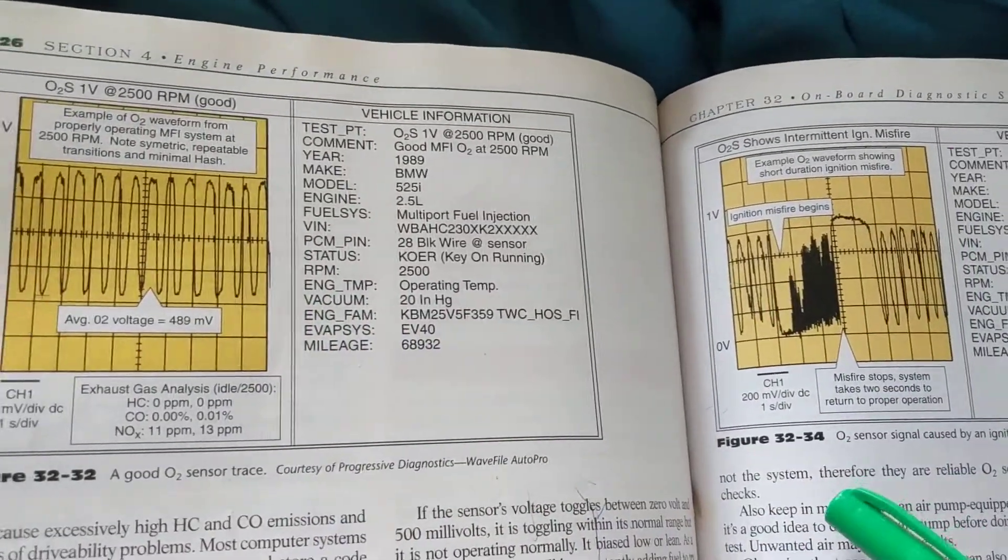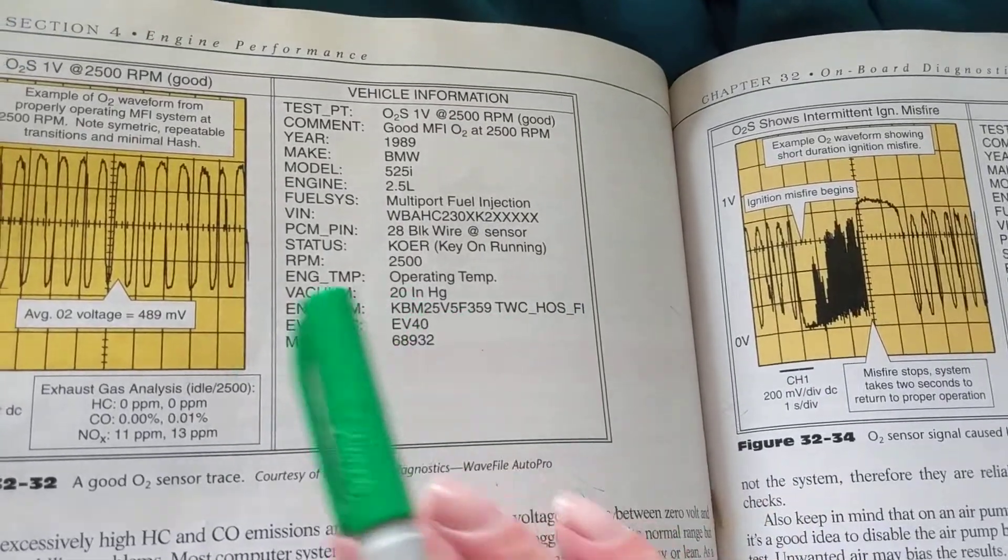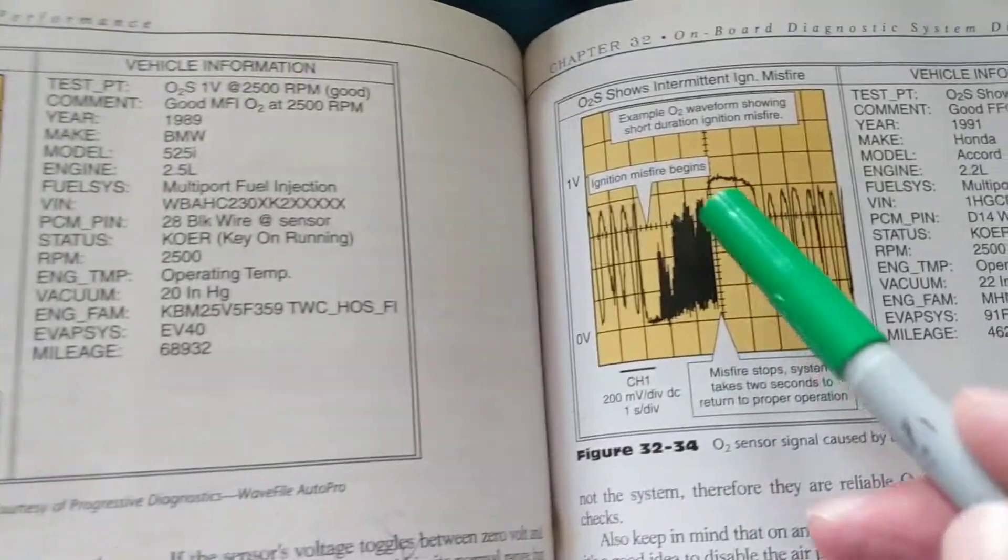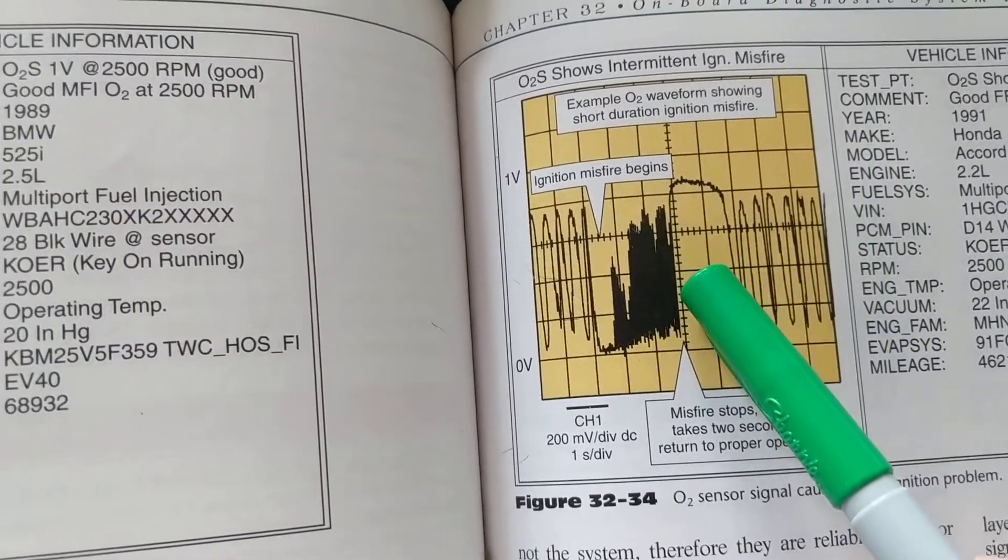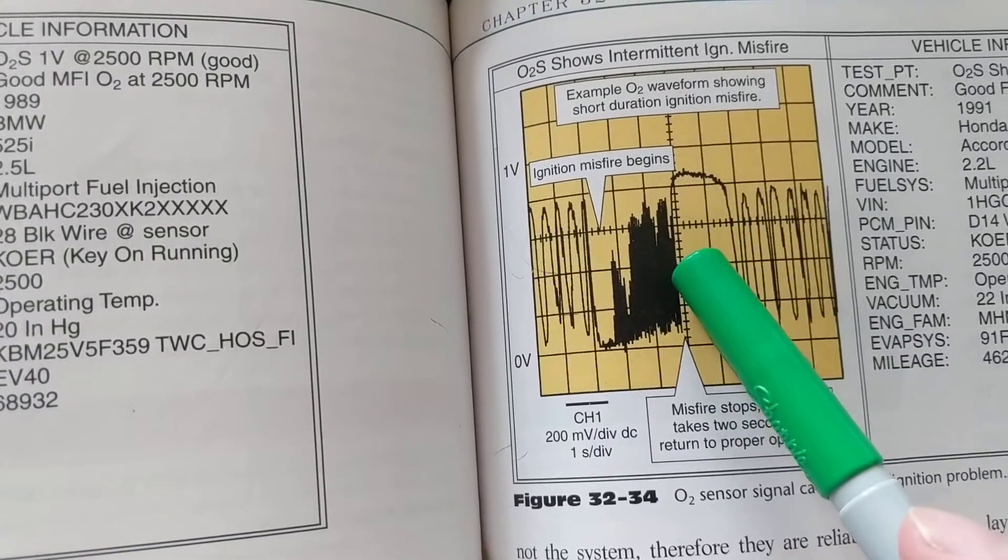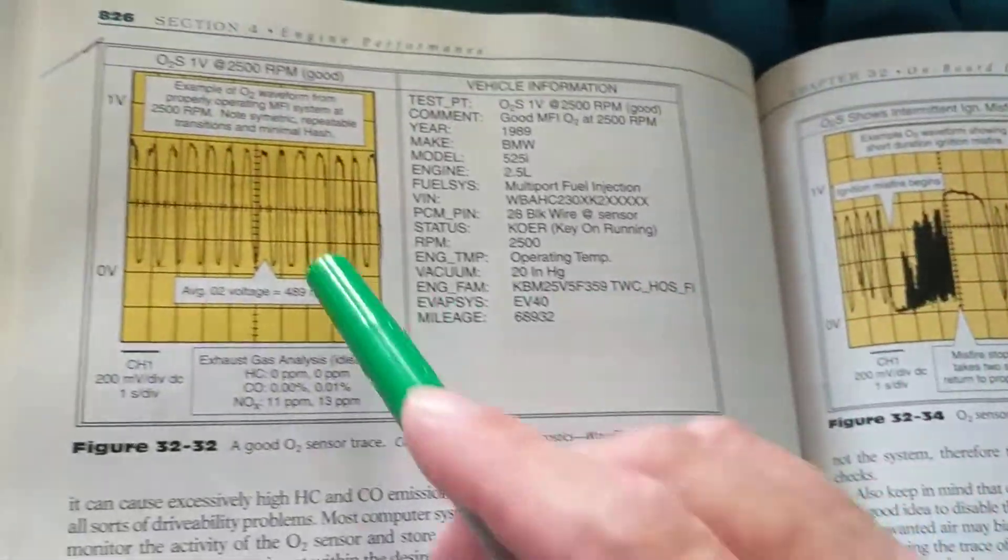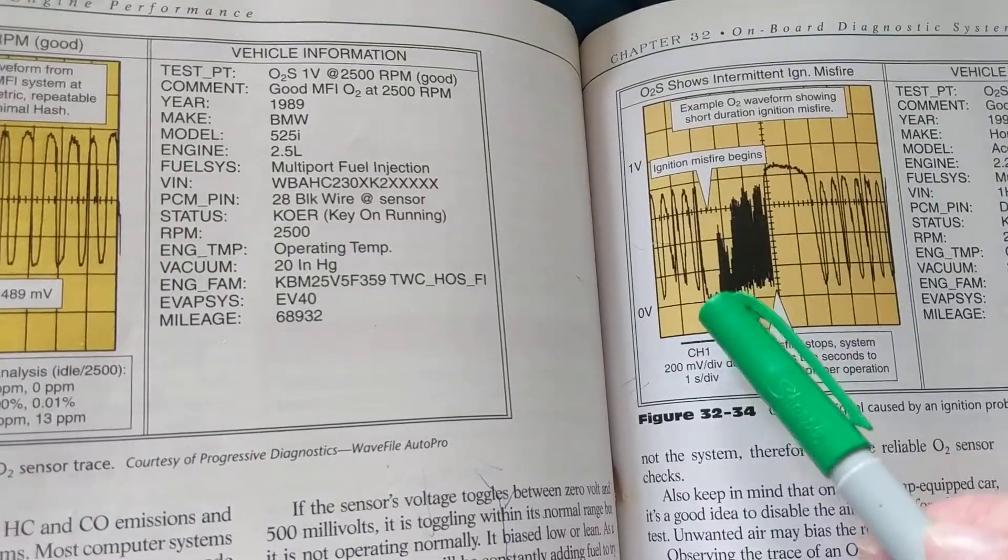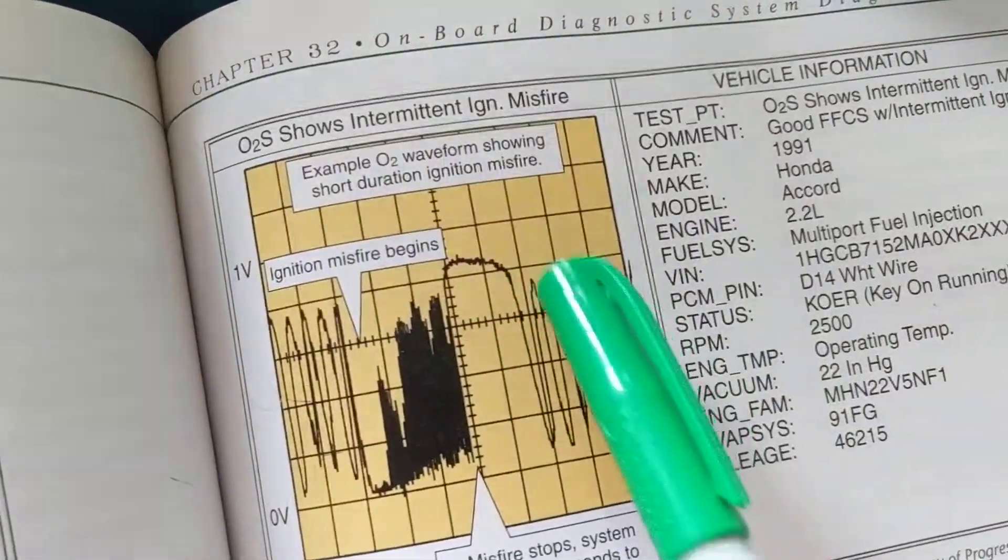Here's a bad oxygen sensor and here's a good one. You don't have to understand anything about signals or oxygen sensors, but what do you pick up on right away? You pick up on this hash. This is a problem. This oxygen sensor output tells you there's a problem. This is nice and even, this is all messy and hash.